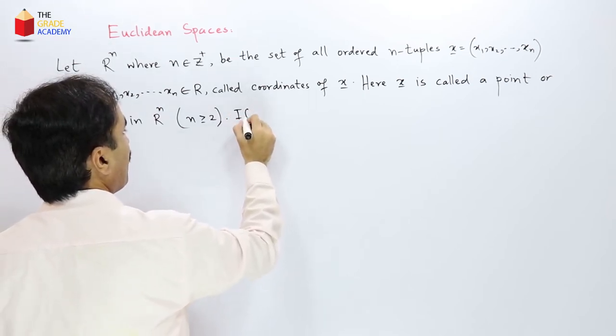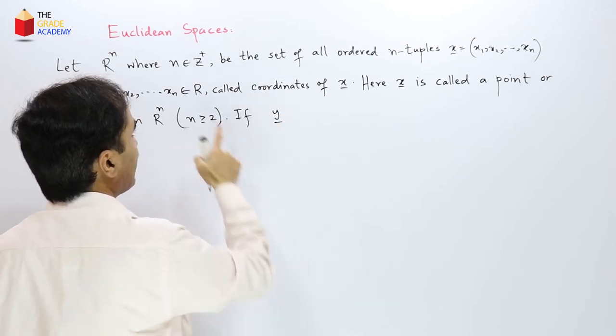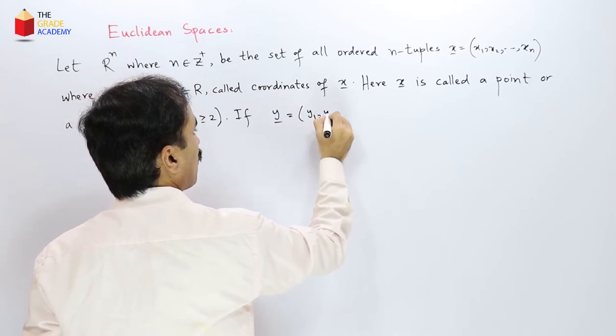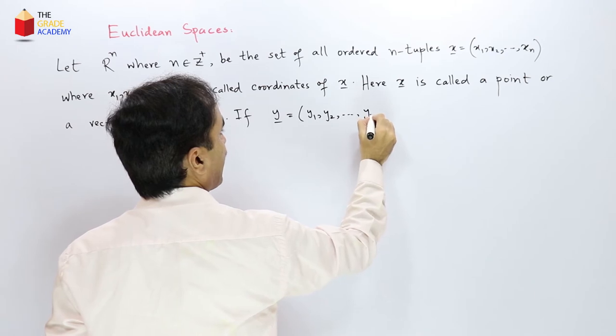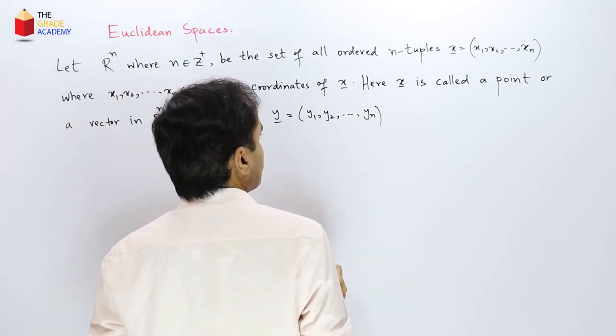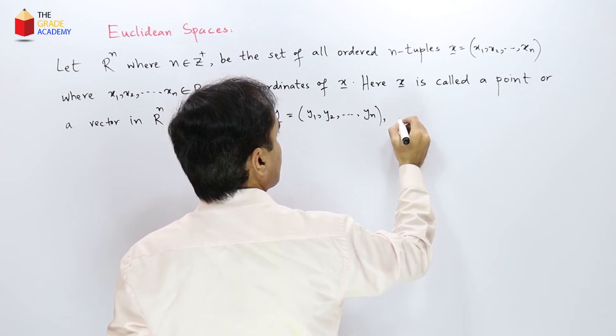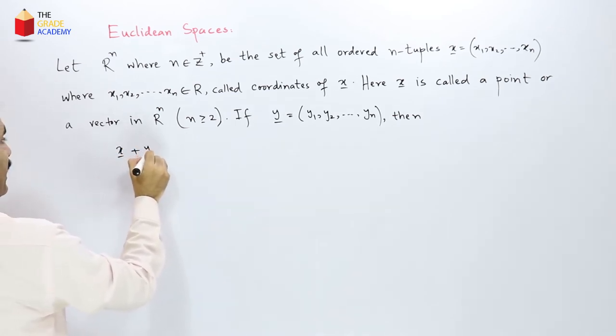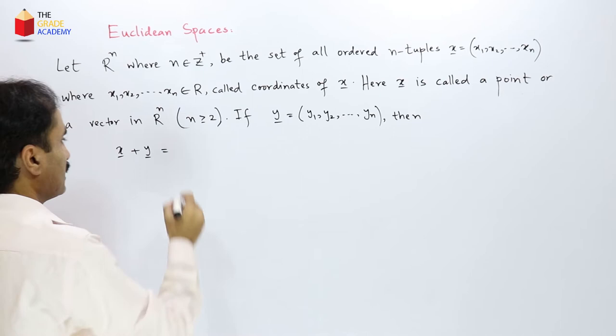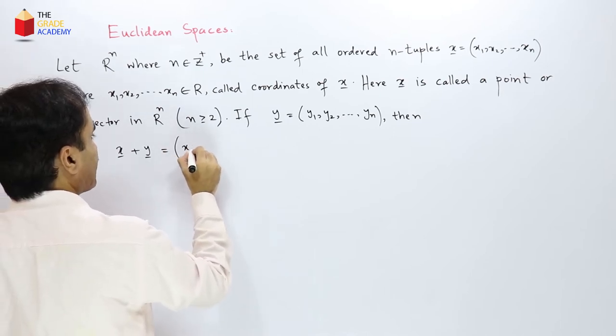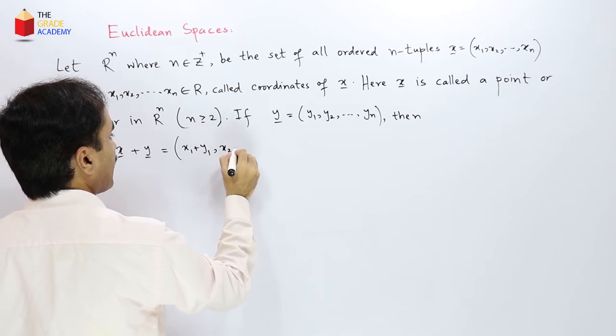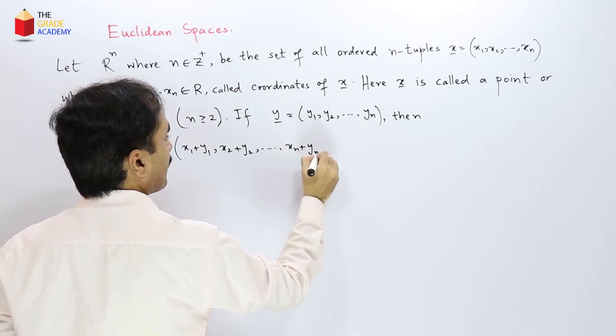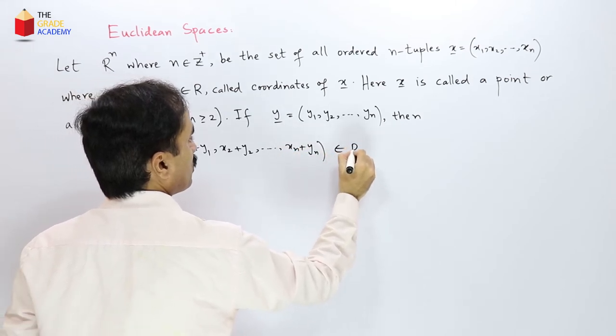So if we consider another point or a vector inside this set Rn which is y1, y2 up to yn then x plus y the sum of these two points or vectors which is x1 plus y1, x2 plus y2 up to xn plus yn. So this also belongs to Rn.